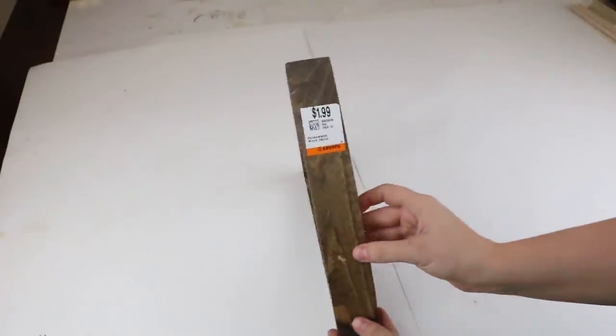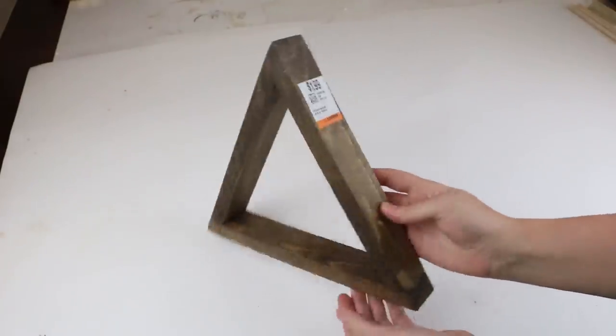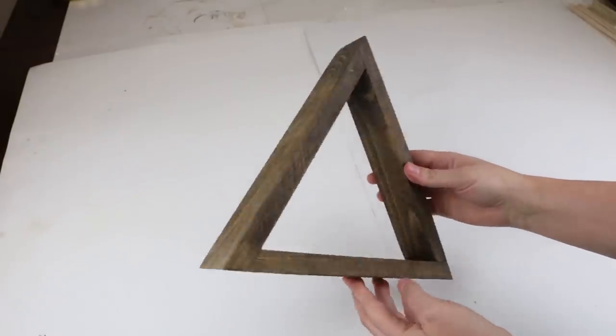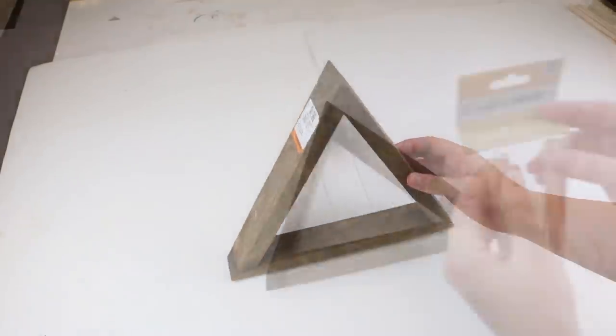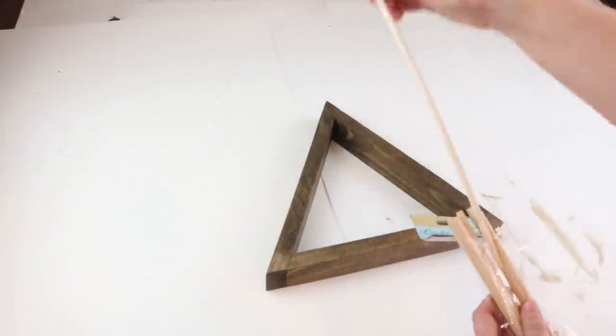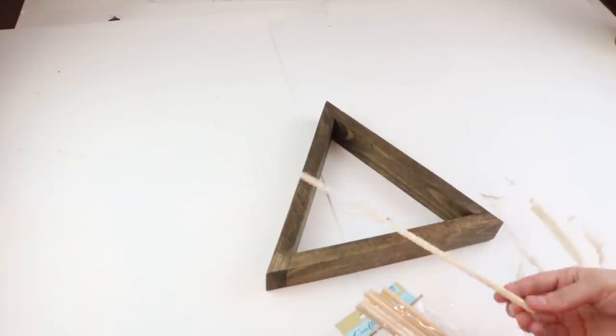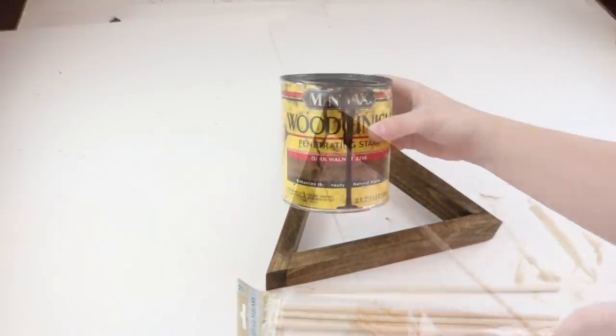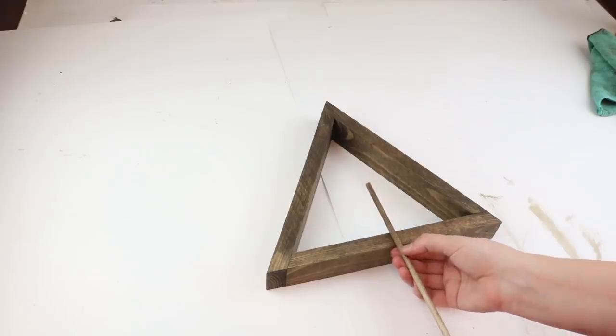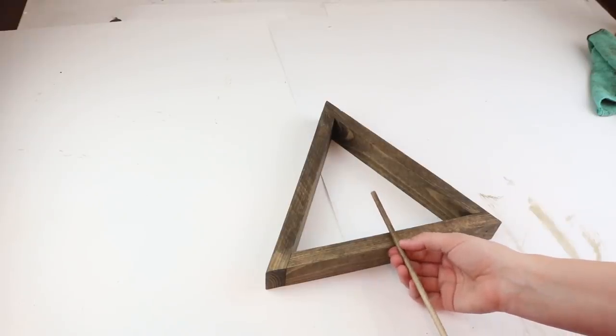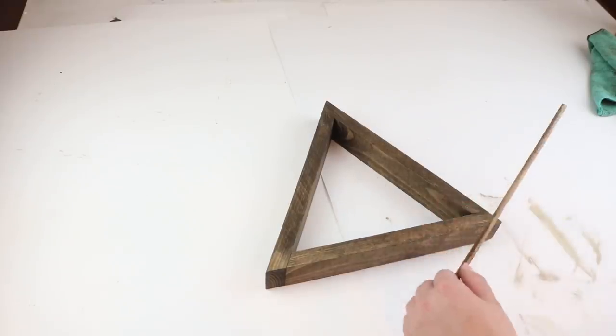For this project we found a really cool triangle wood piece from Savers and it was only $1.99, so we knew we had to grab that. I've seen other designs kind of like this on Etsy and I wanted to make a really cool jewelry holder. You'll need one of these 12-inch dowels from Dollar Tree and I just stained it with the stain that we had on hand, which is the Minwax Dark Walnut stain. It matched it pretty well.